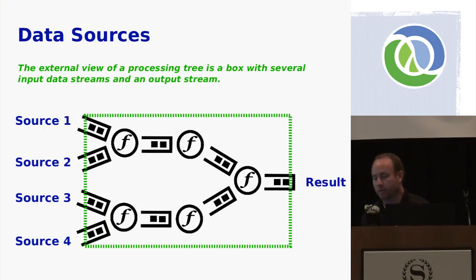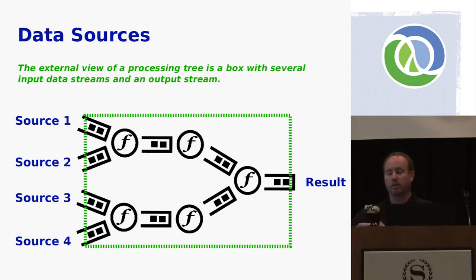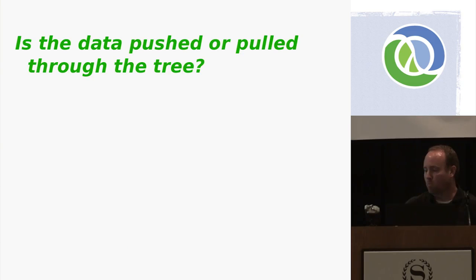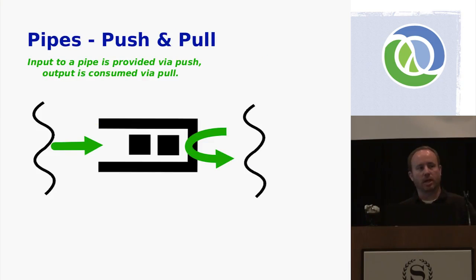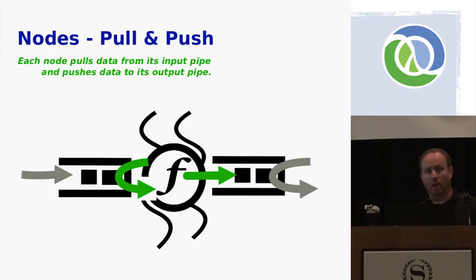From an external perspective, bringing it back to the application: if you take one of these processing trees, each pipe would be connected to a database query and its result set, so there'd be four database queries each wired to an input pipe, and the person who submitted the query would be waiting for the final result on the output pipe. A question that comes up with libraries like this is whether data is being pushed or pulled. The overall flow is from left to right, but pipes expect the producer to push data into them and an active consumer to pull it out. Nodes are the opposite — they expect to pull data from input and push to output. So at a micro level there's pushing and pulling happening throughout the processing tree.